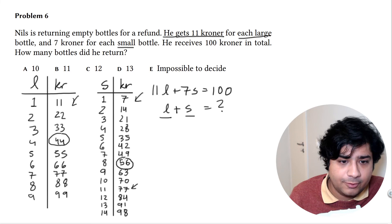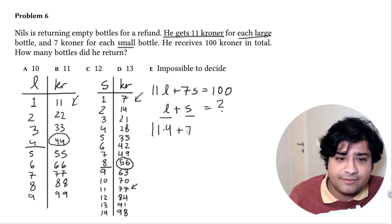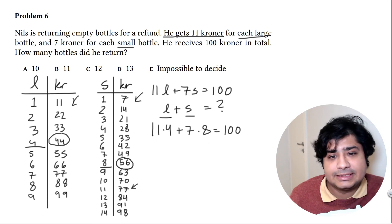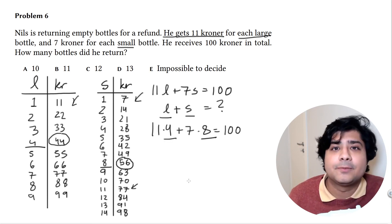If we do this one and this one, 11 times 4 plus 7 times 8 does equal 100. There you go, you got one pair where this works. Question is, are there more than one?